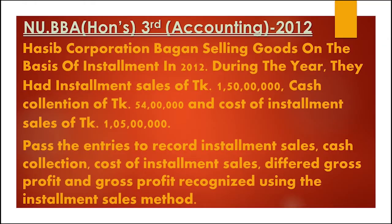Pass the journal entries to record: installment sales, cash collection, cost of installment sales, deferred gross profit, and gross profit recognized using the installment sales method.